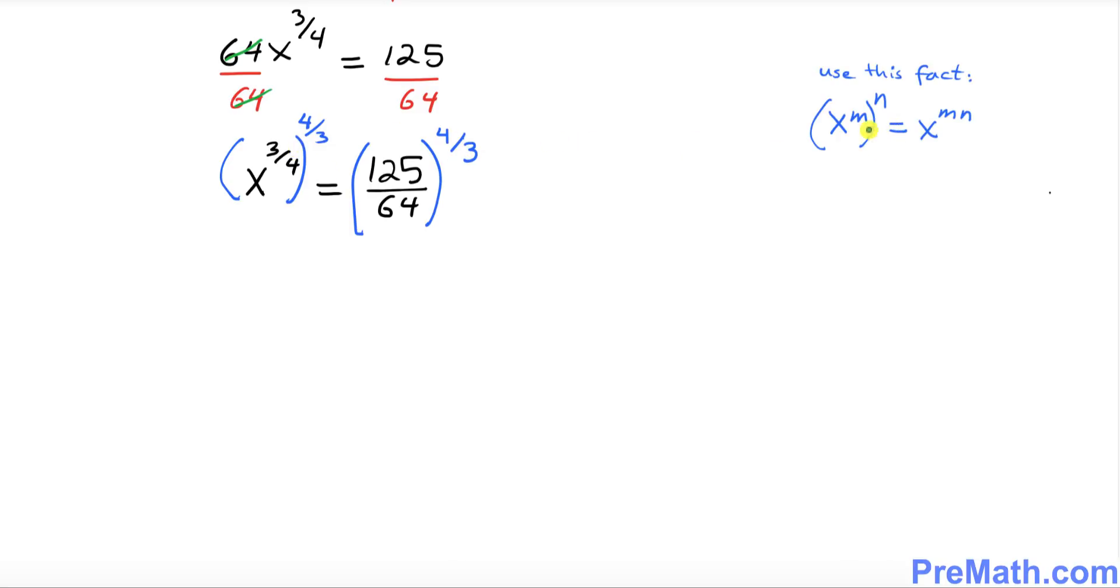And here is the fact that we will be using now on the left hand side. When you have two exponents like x power m then power n, then those exponents you can multiply them out. So we have two exponents. Just go ahead and multiply them out. So x power, you got 3 over 4 times 4 over 3, equals to 125 over 64 power 4 over 3. Now as you can see, this 4 over 3, 3 cancels out, 4 cancels out.